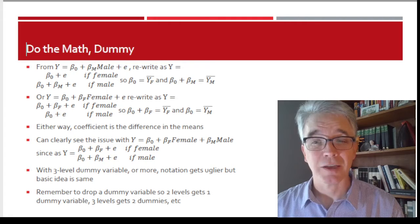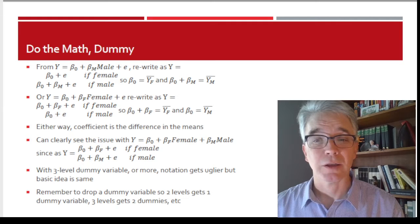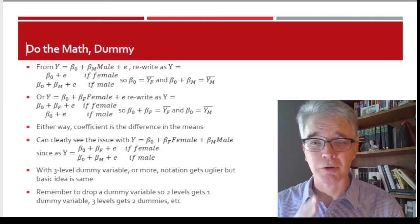And so, again, β₀ in this case is going to be estimating the mean Y for the males, while β₀ + βₓ is going to be the mean value for the females. And so, again, here βₓ is the difference.